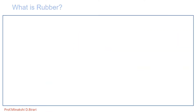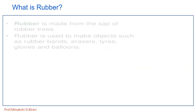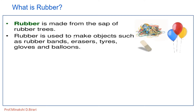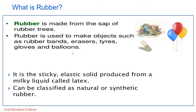First of all, what is rubber? Rubber is made from the sap of rubber trees and is used to make objects such as rubber bands, erasers, tires, gloves, and balloons. It is nothing but the sticky elastic solid produced from a milky liquid called latex.